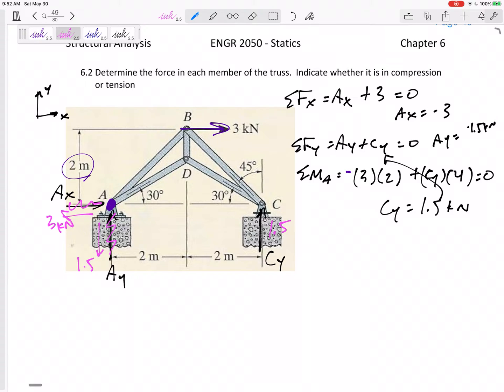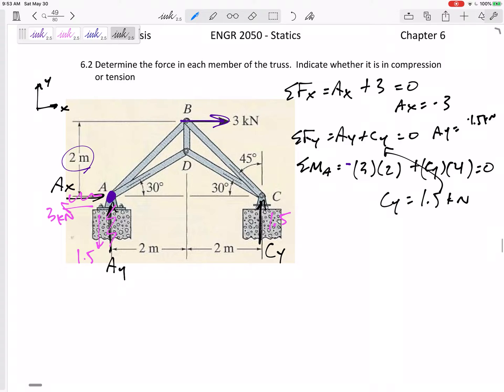Okay, so now if we're doing method of joints, we're ready to go to a joint. Try to find a joint that only has 2 unknowns. I can't start at B. It has 3 unknowns. Can't start at D. It has 3 unknowns. But I think I could choose either A or C. Depending on what the question is asking for, many times it doesn't matter. I'm going to start at C just because.